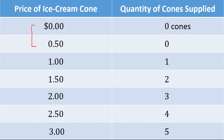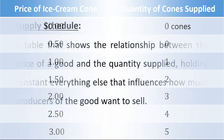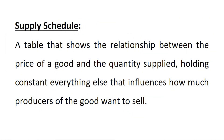This table is known as a supply schedule. A supply schedule is a table that shows the relationship between the price of a good and the quantity supplied, holding constant everything else that influences how much producers of the good want to sell.